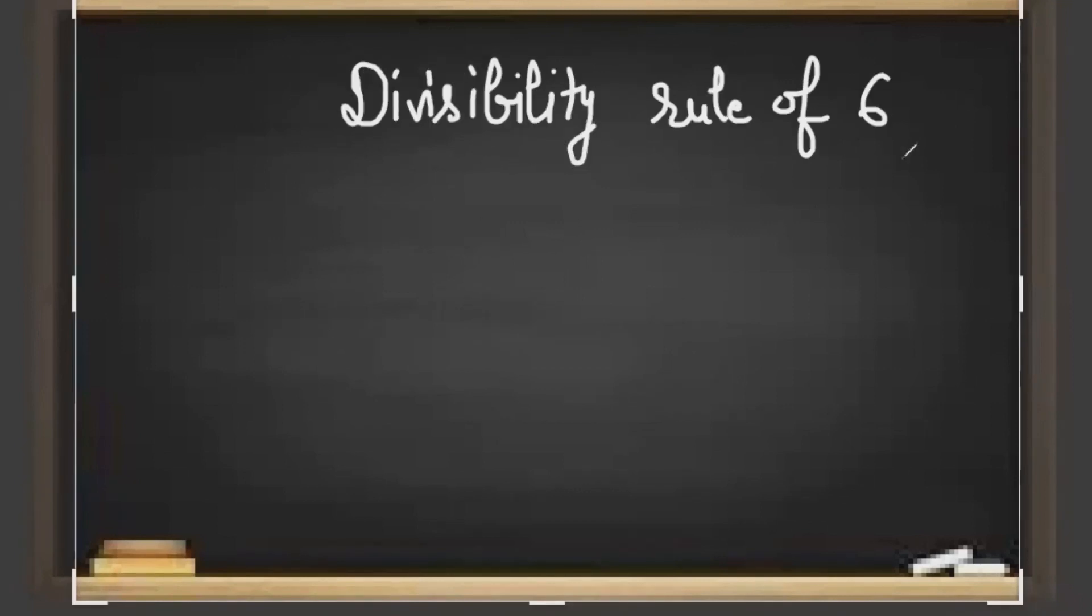Divisibility rule of 6: If a number is divisible by 2 and 3, then the number is divisible by 6. For example, 3,036. The unit place is 6, so that means it is divisible by 2.